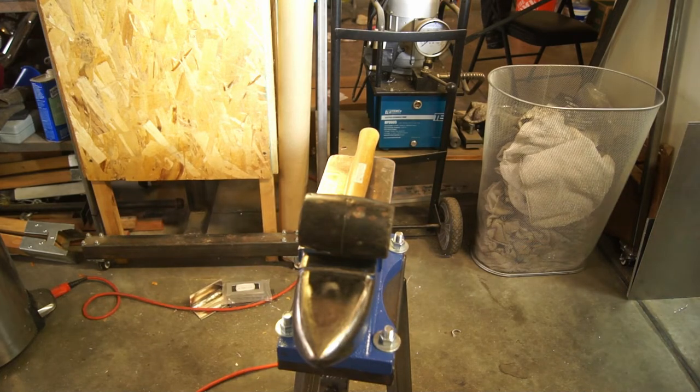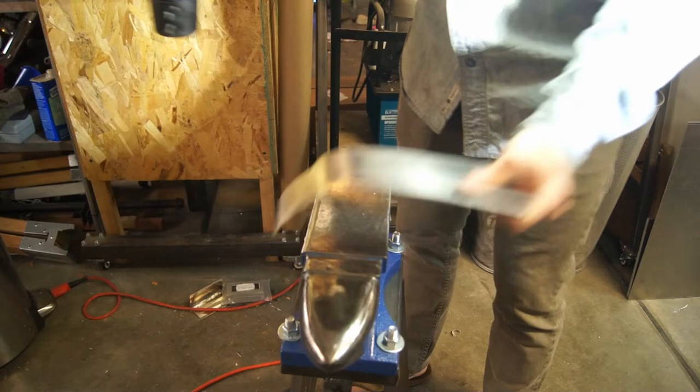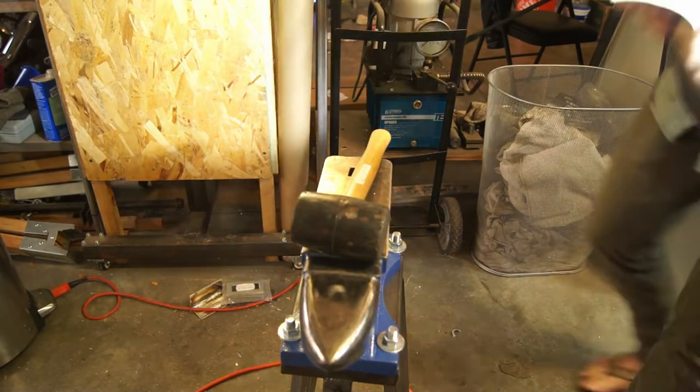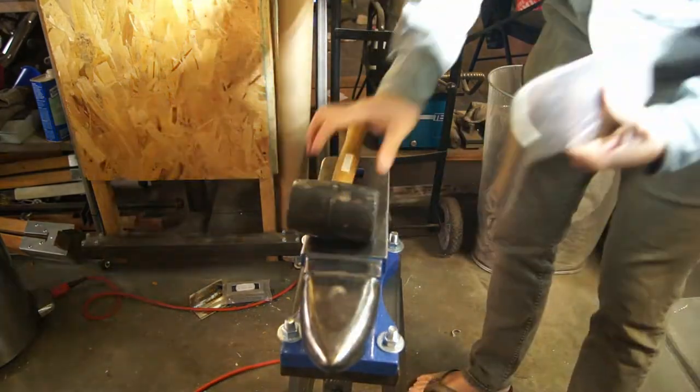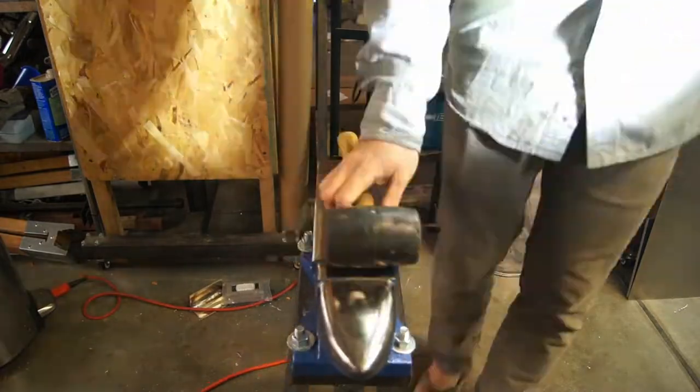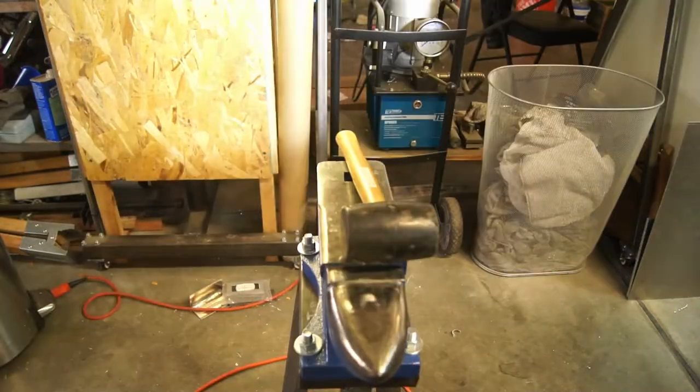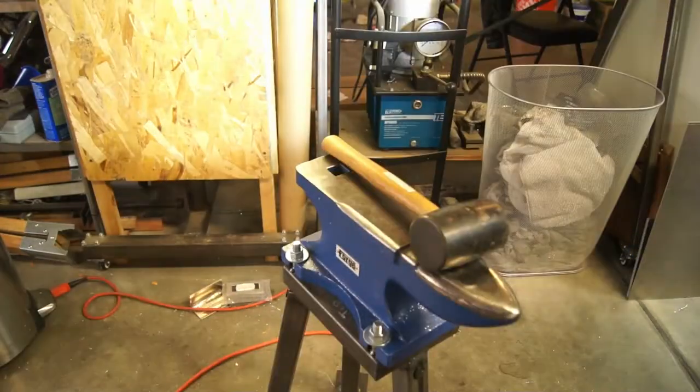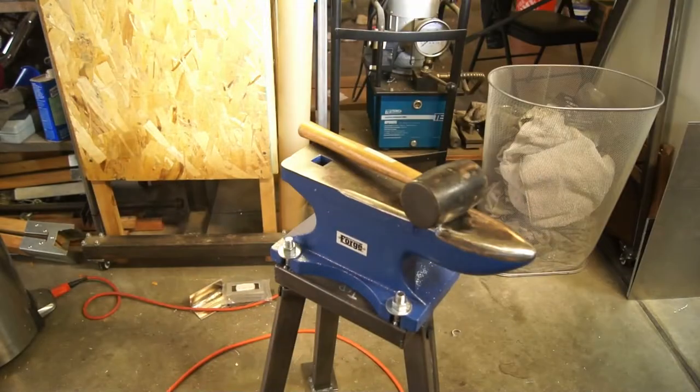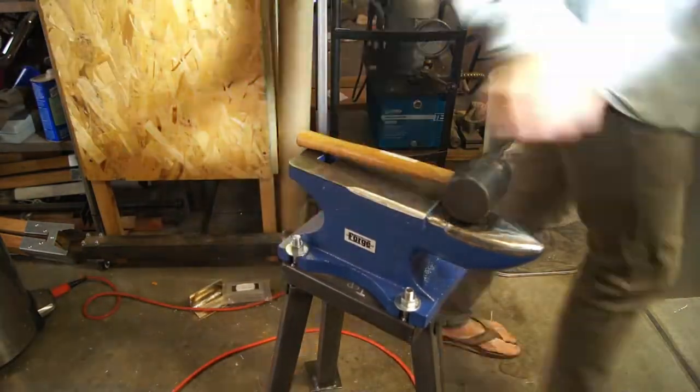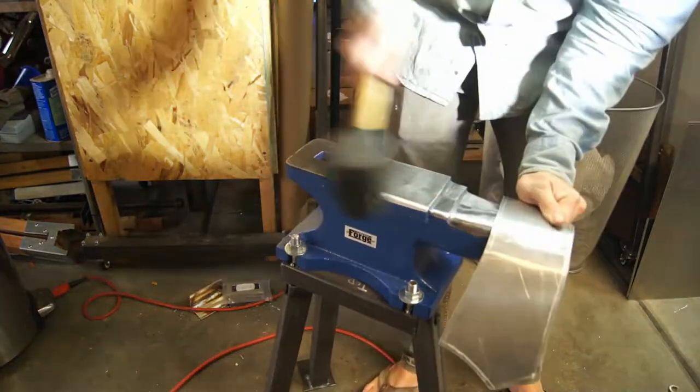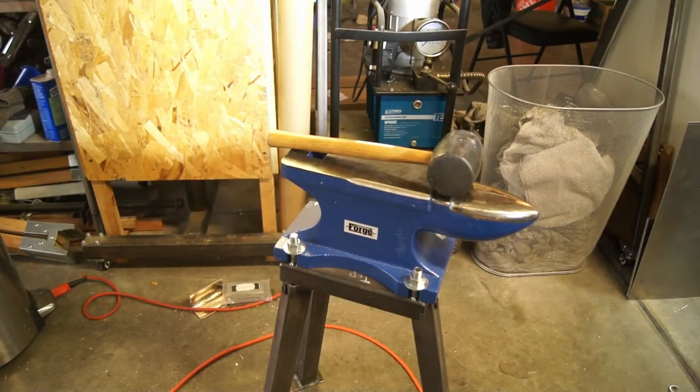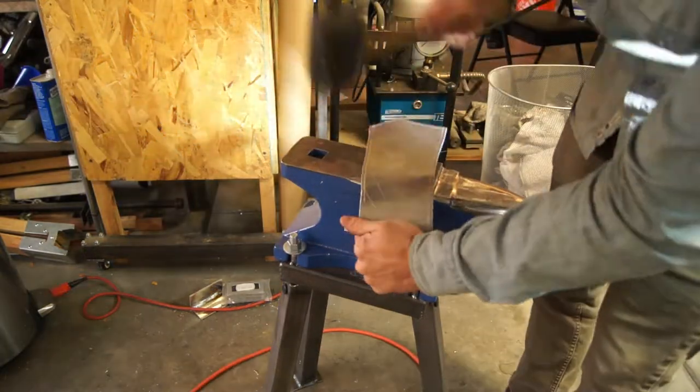If you watch the Iron Man movies, he's hitting the anvil to make the Mark One in the cave, and it sounds awesome - bang bang bang. But you only see like three hammer blows, but in reality it takes a lot more than that to really get the parts to work. This part in particular really gave me a lot of trouble.